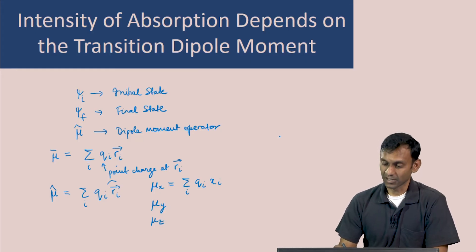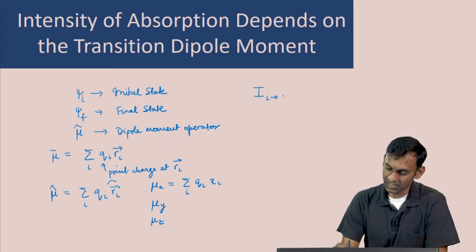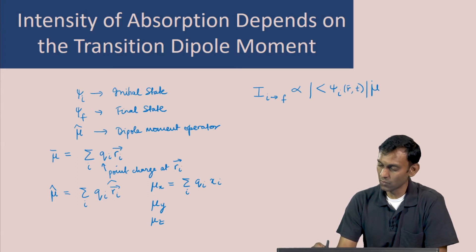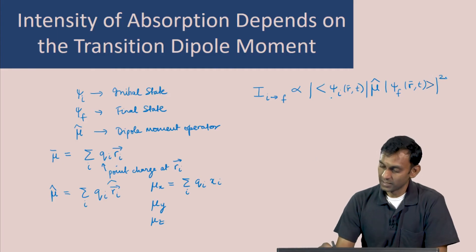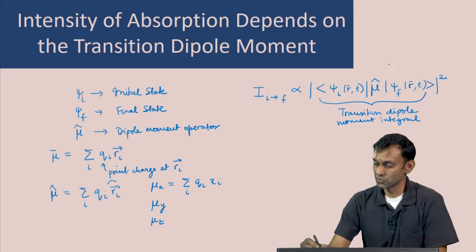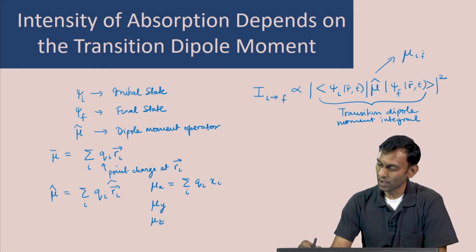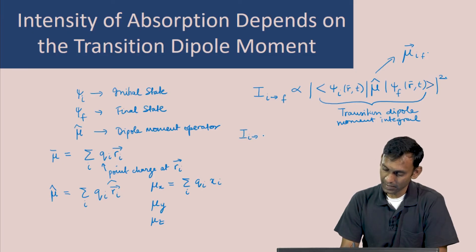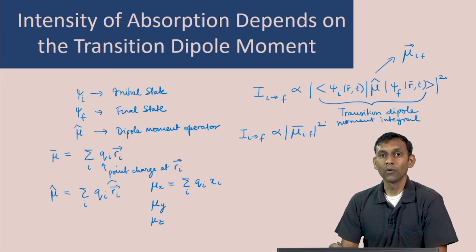The intensity of a transition from state i to state f is proportional to the square of the following integral: ⟨ψ_i(r,t) | μ̂ | ψ_f(r,t)⟩, the magnitude squared. This integral is called the transition dipole moment integral and is usually denoted μ_if. In other words, the intensity of the transition from i to f is proportional to |μ_if|². We will now derive this result.